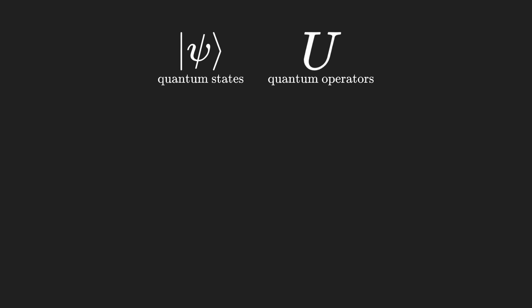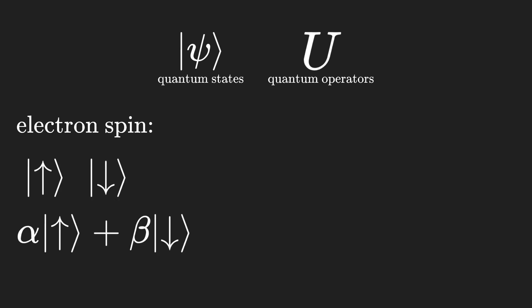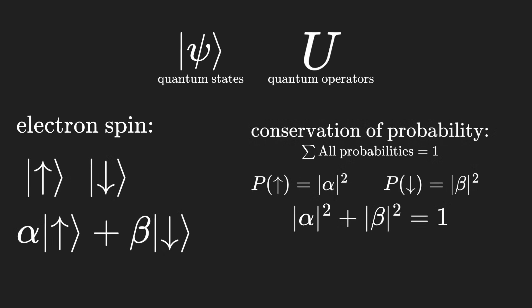Quantum states have this particular notation, known as the bracket notation. A nice and simple quantum system is the spin of an electron, which can be up, down, or any superposition of both basic states, as long as probability is conserved. The modulo-square of complex coefficients alpha and beta are the probabilities that the spin will be measured up or down respectively.